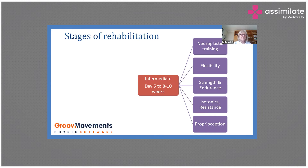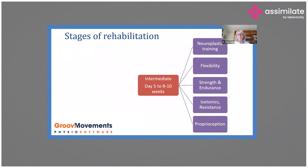At this stage we do strength and endurance training. We might move from isometrics to isotonics with different types of resistance, and we'll start doing balance and proprioception exercises — maybe standing on one leg, eyes closed, standing on an uneven surface or a Bosu ball — to progressively challenge that proprioceptive system.